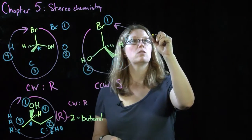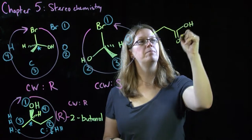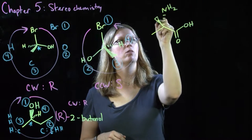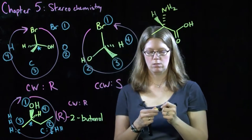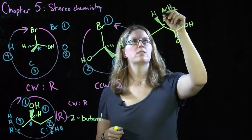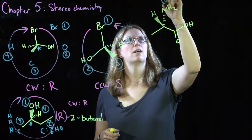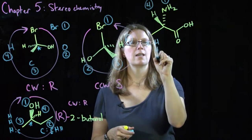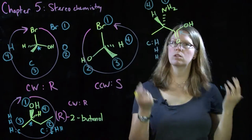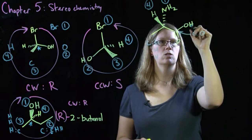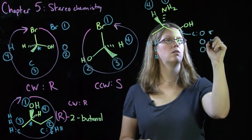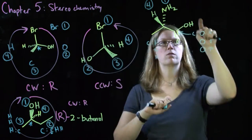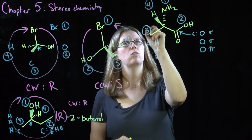What you would do to the name is put R in parentheses in front of it, so this would be (R)-2-butanol. We can also look at alanine as an amino acid. Here, hydrogen is coming out toward us. Assigning priorities, we have nitrogen, carbon, carbon, and hydrogen — nitrogen has the highest atomic number, hydrogen is fourth. For the two carbons: one has three hydrogens (a methyl group), while the carboxylic acid carbon has a sigma bond to an oxygen, another sigma bond to an oxygen, and a pi bond.